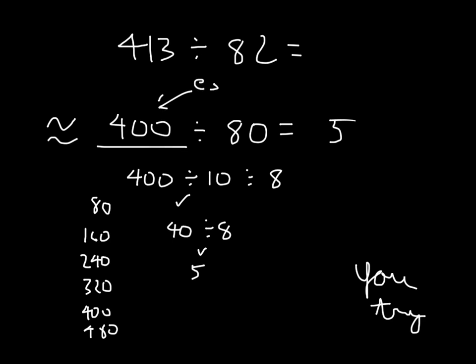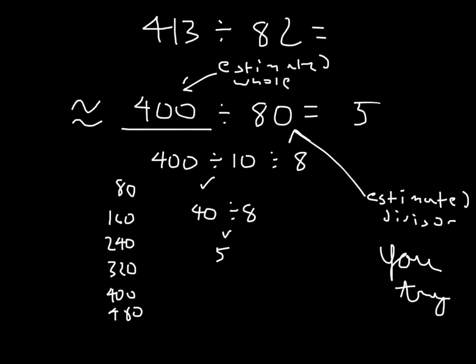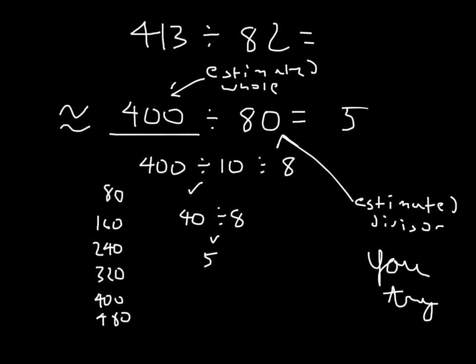this is our estimated whole, and again this is our estimated divisor, and of course we have an estimated quotient as well. And our estimated quotient, of course, is 5, which is right here, and that's our estimated answer for 413 divided by 82.